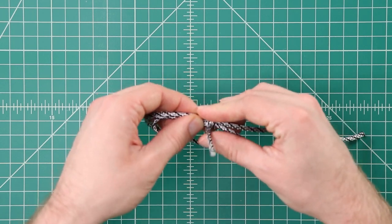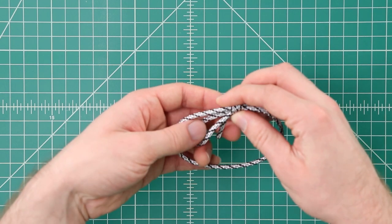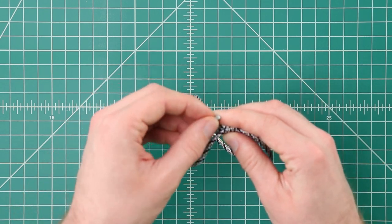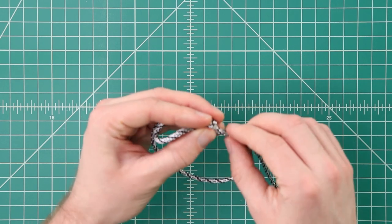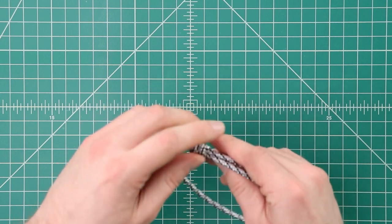You're going to do that one more time. And then on the last time you're going to stick the working end through the loop you made. And then we're going to tighten that down. So it forms a nice adjustable knot.